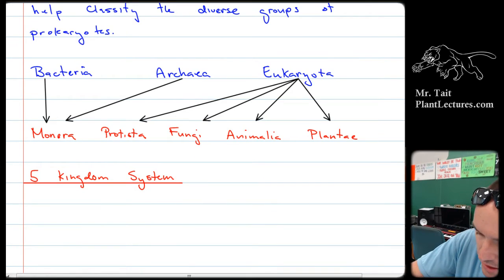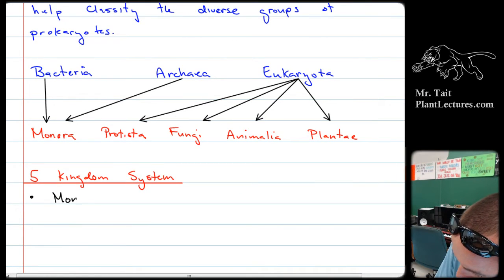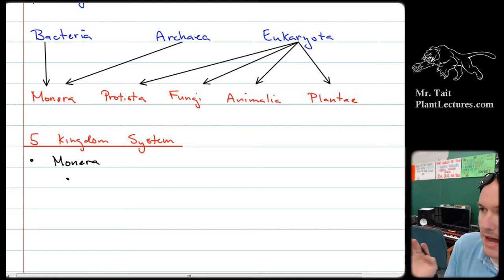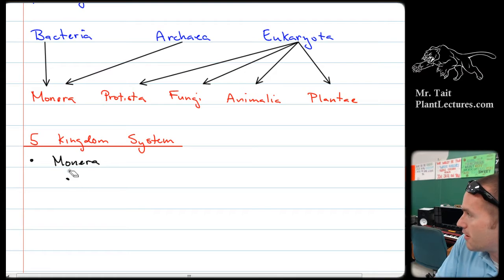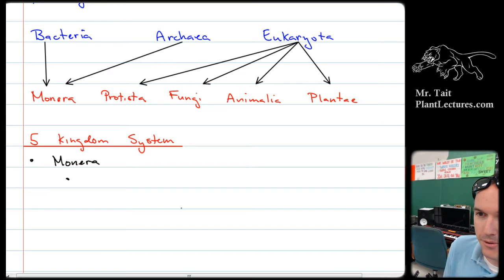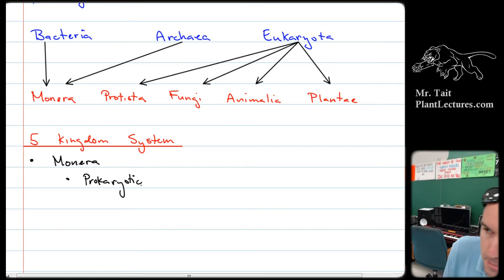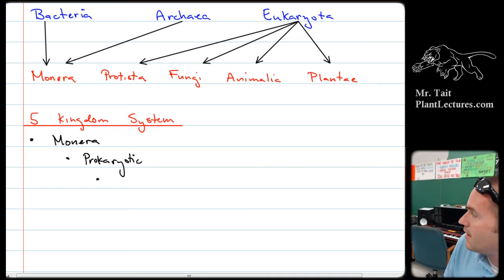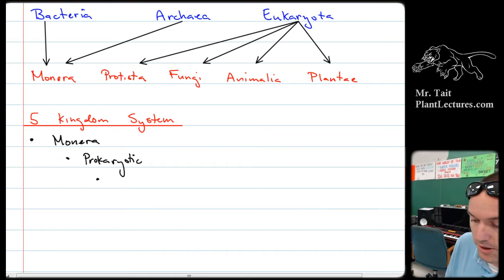Let's talk about the five-kingdom system. We'll start with the group Monera. We're going to put the major classifications — the things you have to have in order to get into that kingdom — as the very first bullet point. In order to get into the kingdom Monera, your required characteristic is being prokaryotic. Anything that's prokaryotic, no matter what, goes into the kingdom Monera.